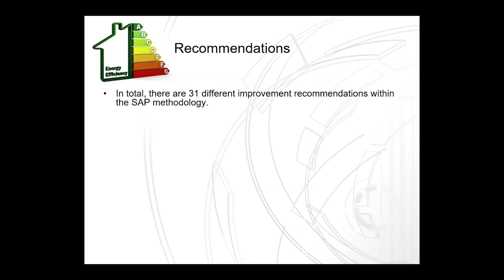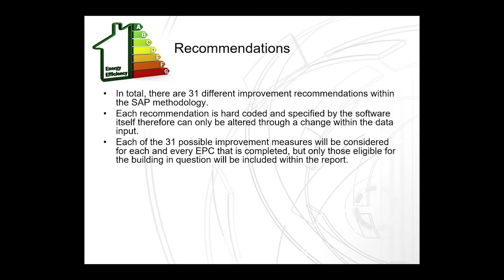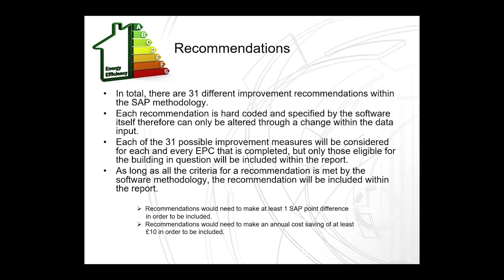In total, there are 31 different improvement recommendations within the SAP methodology. Each recommendation is hard-coded and specified by the software itself, and can therefore only be altered through a change within the data input. Each of the 31 possible improvement measures will be considered for each and every EPC completed, but only those eligible for the building in question will be included within the report. It is worth noting that recommendations would need to make at least one SAP point difference to be included, or would need to make an annual cost saving of at least £10 in order to be included.